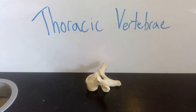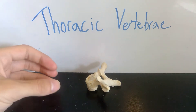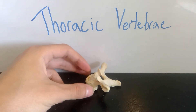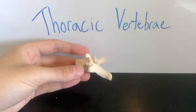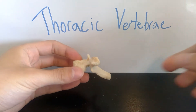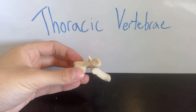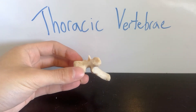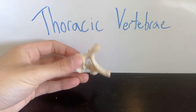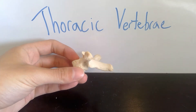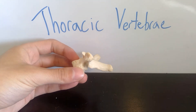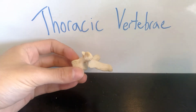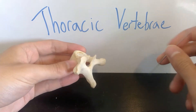We're back with the thoracic vertebrae, which I finally have procured. We're going to first start with the bony landmarks of this vertebra, and then I want to hopefully show it with a rib. It'll be kind of hard to do that because it's by itself, but we'll show it in a different video later on as well to hopefully make it more clear — it's a little bit tricky.